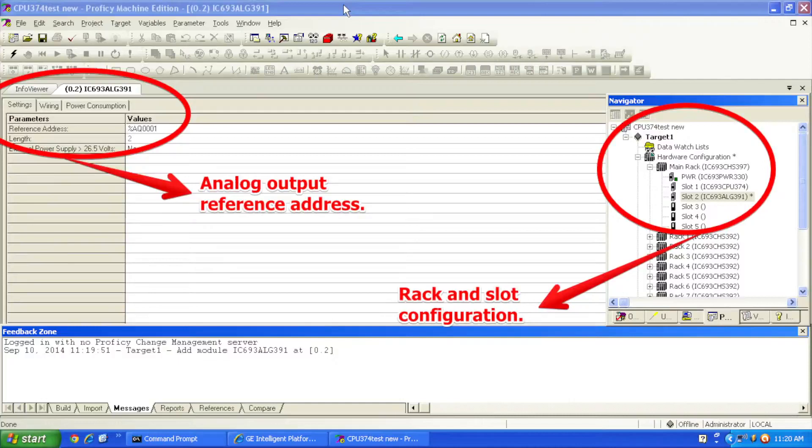Since this is a brand new fresh file, it is %AQ, which means output 0001. And that's my reference address. So when I go to turn on the outputs, I need to start with reference address 0001 in the analog output table and then end on 0002. So those are the two channels that will activate, those are the two locations or addresses that will activate the two channels.